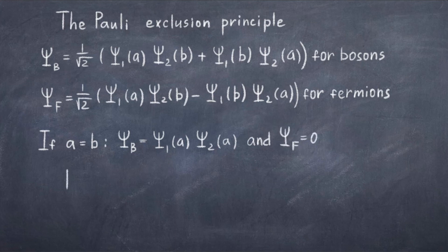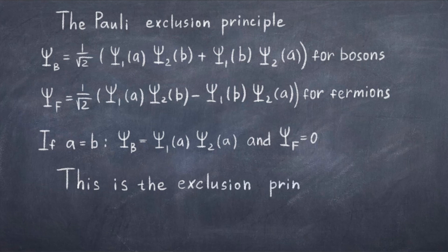If we on the other hand consider the fermion case, we see that due to the minus sign, they cancel each other, so we have that psi f is just equal to zero. This is the Pauli exclusion principle. What this tells us is that two identical fermions cannot occupy the same quantum state, but two bosons can, and this makes a huge difference.